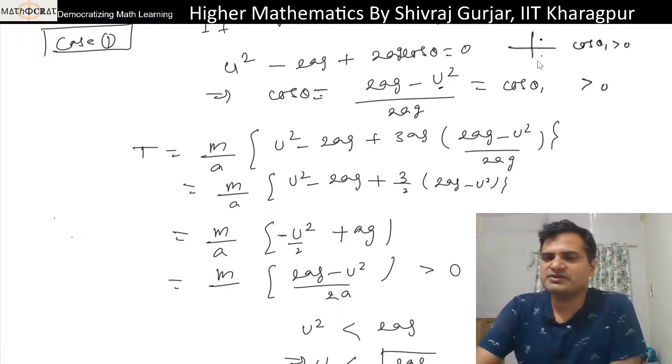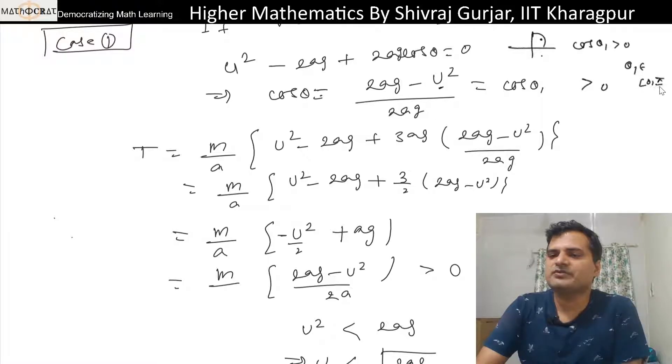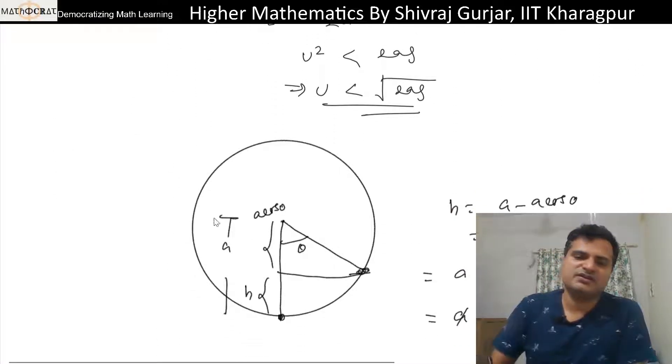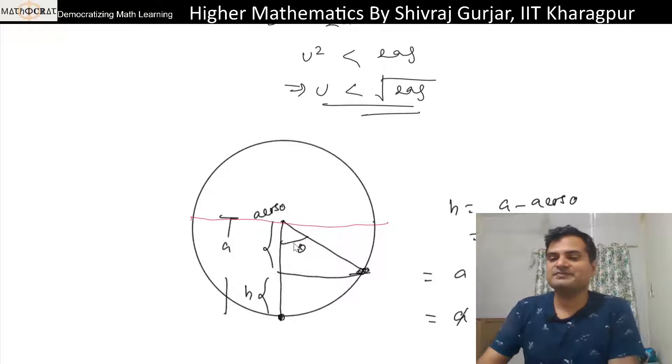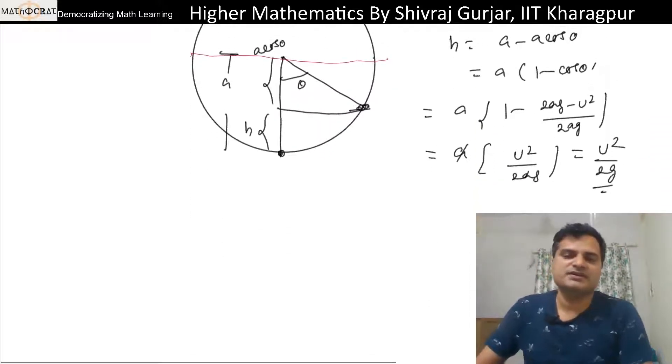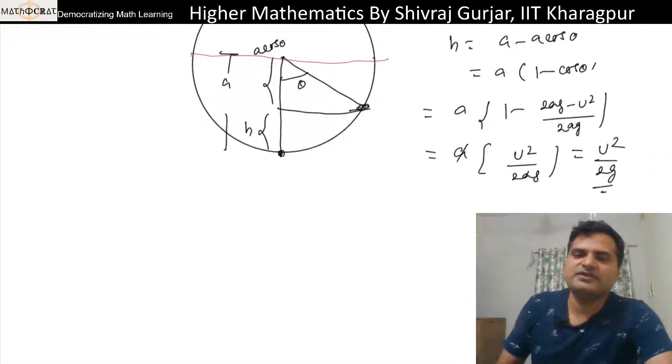That means this is in first quadrant either this and fourth quadrant. So forth तो यहाँ पे को sense नहीं है, first quadrant में ये होगा. इसका मतलब θ₁ will be between 0 to π/2. इसका मतलब यह जो है, this particle won't rise above this horizontal direction.